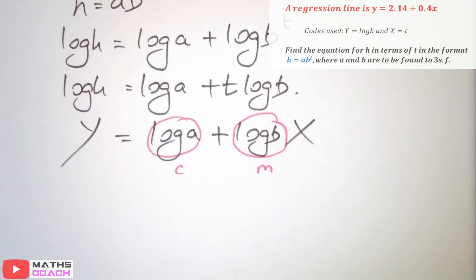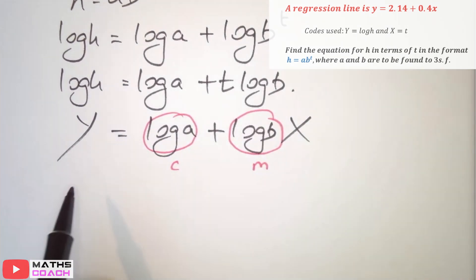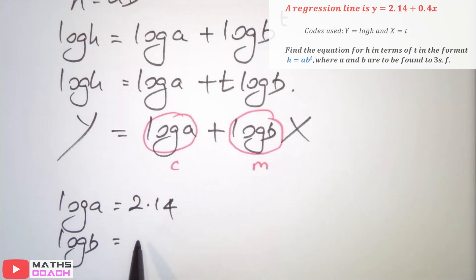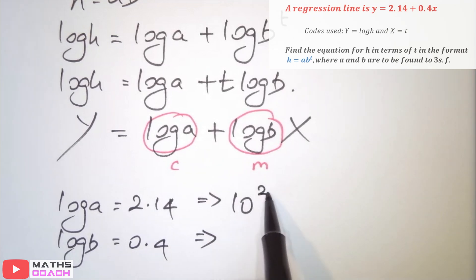We now need to work out and find a and b by comparing with the question. So, we know that our constant from the question is 2.14. That's our y-intercept. So, we can say log of a equals 2.14. And subsequently, our gradient is 0.4. We can then say log of b equals 0.4. And to undo log, we do 10 to power 2.14, and 10 to power 0.4, respectively.